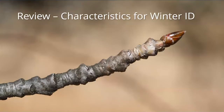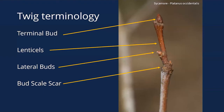A quick review of winter ID characteristics we'll mention for each species: on buds and twigs, we have the terminal bud at the tip of the twig, lateral buds on the sides, bud scale scars where last year's terminal bud was marking the start of new growth, and lenticels — little dots on many twigs used for gas exchange.